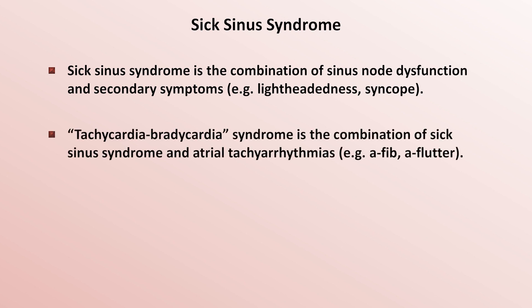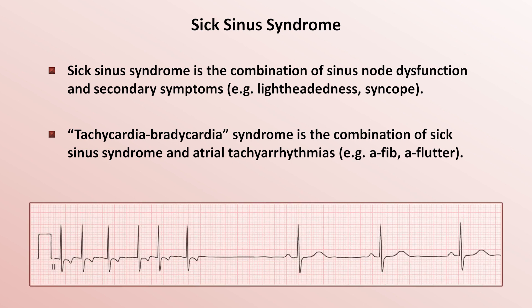The tachybrady syndrome is the combination of sick sinus syndrome and atrial tachyarrhythmias, usually AFib or AFlutter. Here's a great instructional rhythm strip from someone with the tachybrady syndrome. The first 6 beats are part of a rapid, irregularly irregular, narrow complex tachycardia without discernible P waves — so almost certainly AFib. Then the patient spontaneously converts out of AFib, followed by a pause of about 2 seconds while the dysfunctional sinus node wakes up, followed by a sinus bradycardia at about 45 beats per minute. This is classic tachybrady.